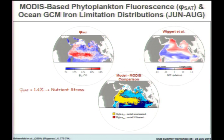Mike Berenfeld was working on a MODIS-based approach using the fluorescence line height band — not available on SeaWiFS — developing satellite-based maps of phytoplankton fluorescence. They had a 1.4% cutoff: if you're getting red on the scale, that's indicating nutrient stress. Looking at June to August from the Wigert model, you get really nice spatial coherence. That was a nice result.